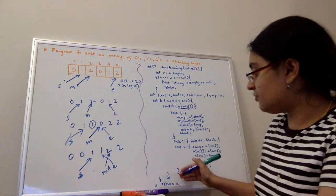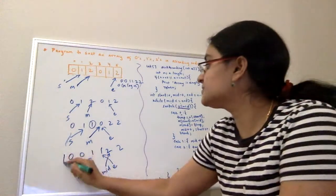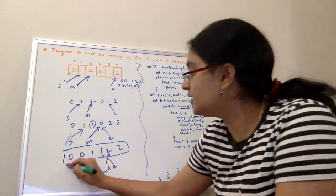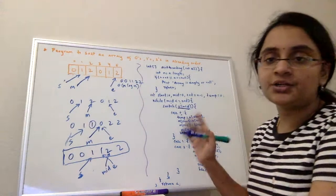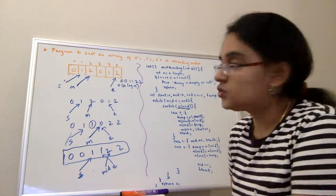By the time I come out of the loop, my array is sorted according to the ascending order, and that array I am returning back to the calling function.